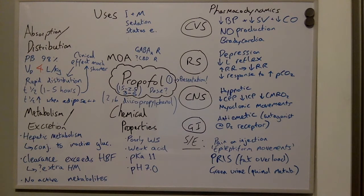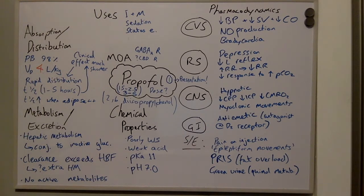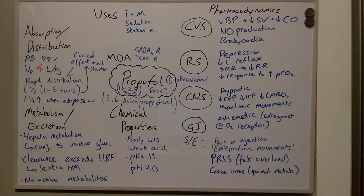For the central nervous system, the drug is classified as a hypnotic. It causes a reduction in cerebral perfusion pressure, a reduction in intracranial pressure, and a reduction in cerebral oxygen consumption. It can cause myoclonic movements. For the gastrointestinal system, it acts as an antiemetic as an antagonist at dopamine receptors.